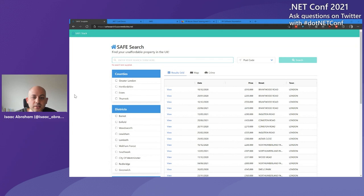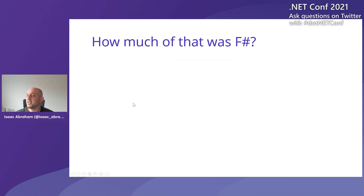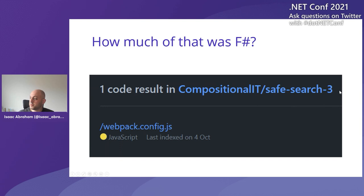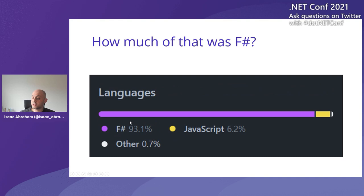I'll go back to the slides. I did survive the demo gods. The question I always ask is: how much of that do you think was F-Sharp? Usually people say maybe 25 to 50% at most. The reality is over 90% of that was all F-Sharp, with a tiny bit of JavaScript. The only JavaScript file in this repository — which is public — is actually just a Webpack file. Everything else is F-Sharp. There's one tiny HTML boilerplate file, but everything else is F-Sharp.